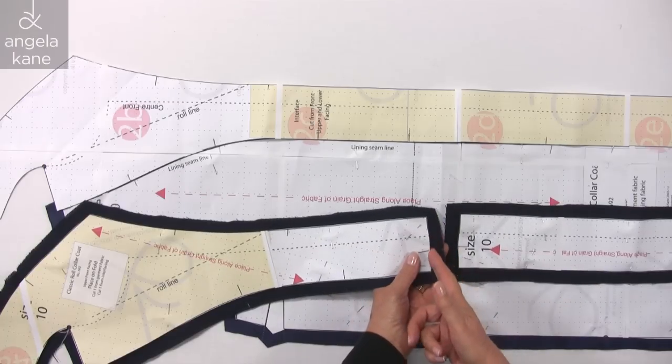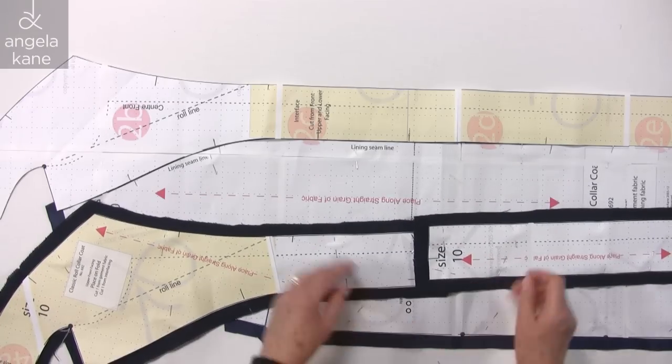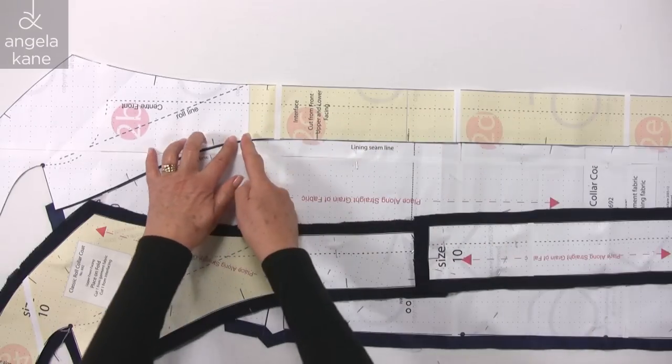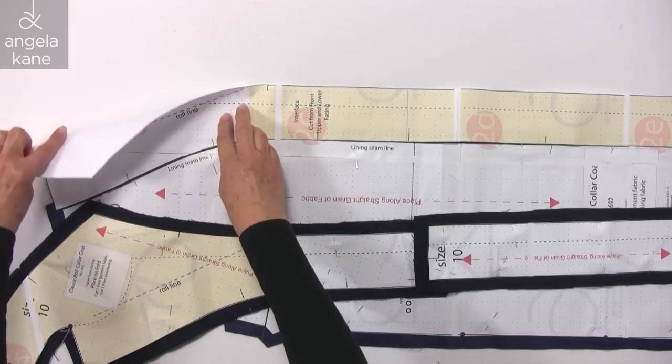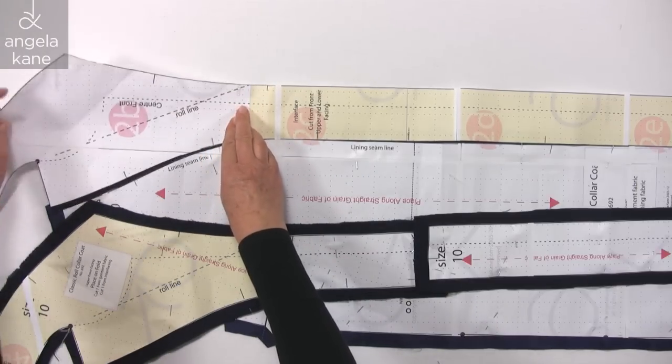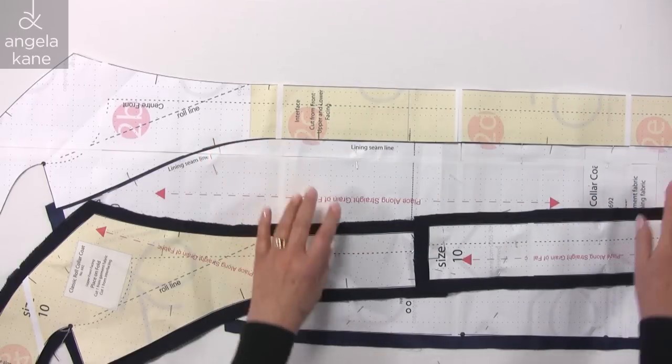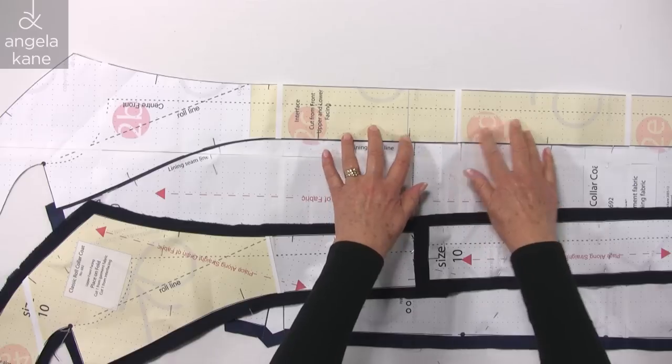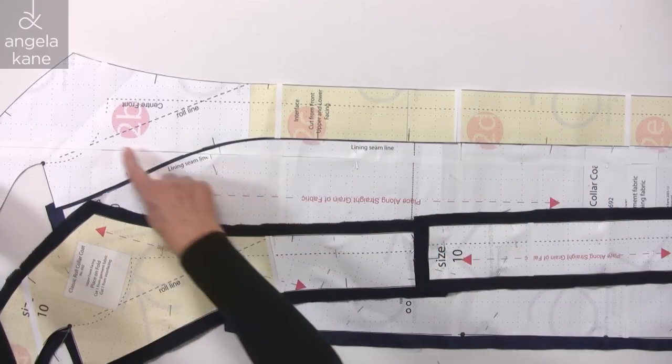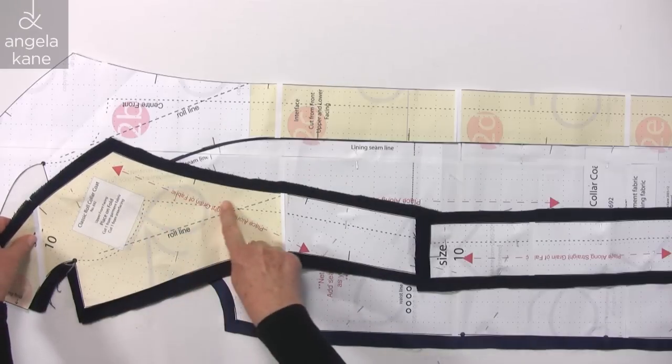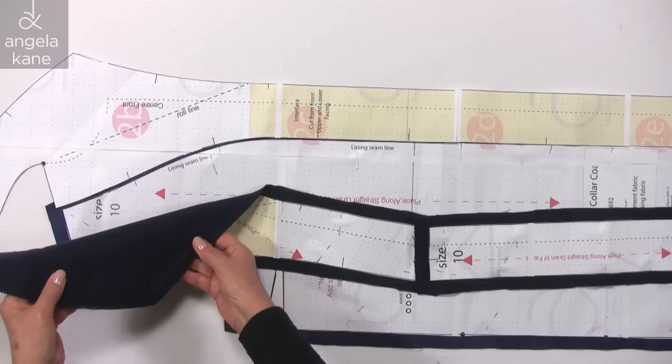Although we have the join in our garment facing at the waist, we want the join in our interfacing at the point of the roll, so that the parts of the garments that face out are supported by the interfacing. The bottom half of the interfacing is fused to the coat front, and the top half is fused to the coat front facing, forming the top collar.